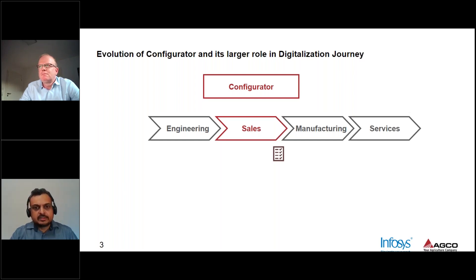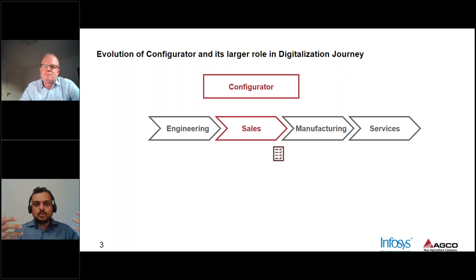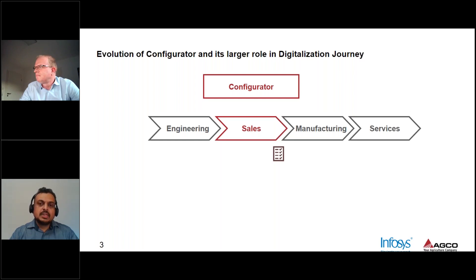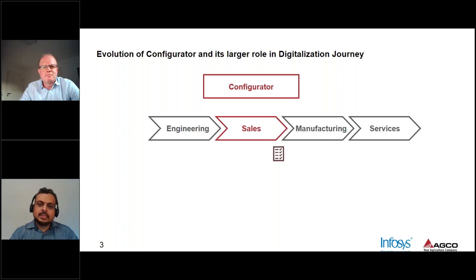However, our friends at Configit took a significantly big leap with their third-generation configurators, where they started taking a top-down view. You start with the modeling — you look at the whole configurator as a business object and model — and then you drive down to valid configurations. That was a fantastic journey and a very good leap into configuration, but it still remained focused on getting a valid configuration as the outcome.